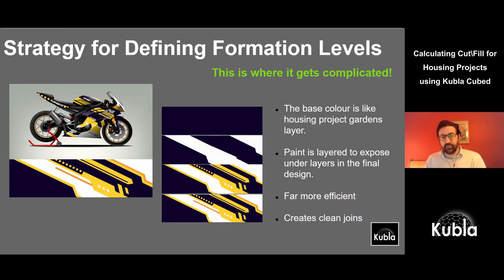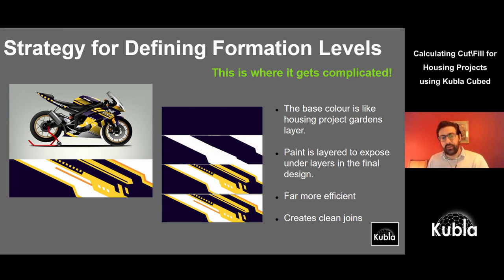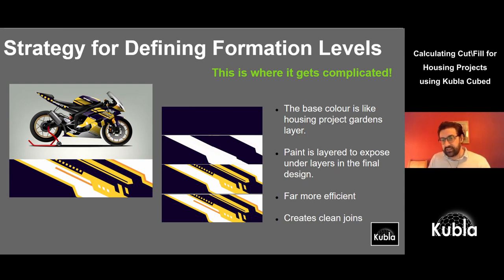We describe it as a painting analogy: painting a motorbike most efficiently means spraying the base coat first, then adding bands of color, then fine detail, then decals — rather than painting around all the detail from the start. Similarly, for a housing estate you do the gardens or soft landscaping as a base layer, then override with building pads, garages, roads, etc. on top. The gardens are at the top of the priority list and you work down from there.